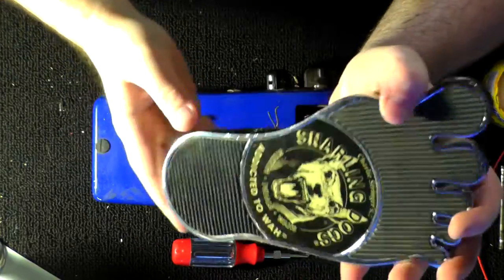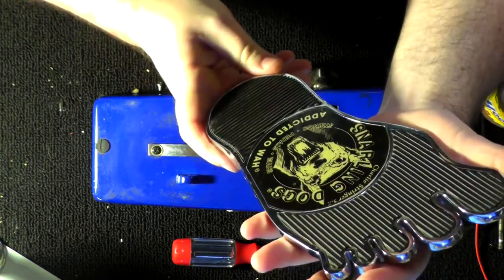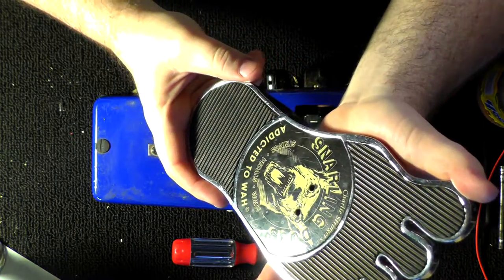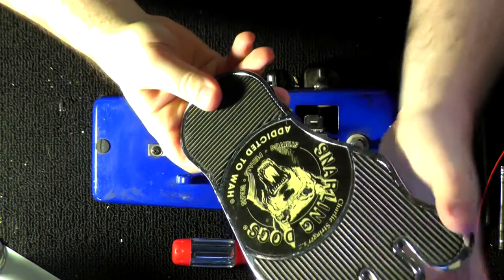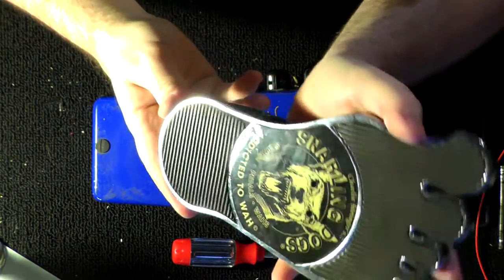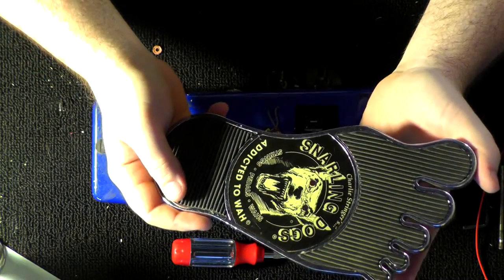All right guys, today we're going to be fixing a Snarling Dogs Blues Balls pedal. If you ever hear any noise in the background, it's because there's an 11-year-old that lives here and he never stops talking, but no worries. This pedal is just a 90s Charlie Stringer brand Snarling Dogs pedal.